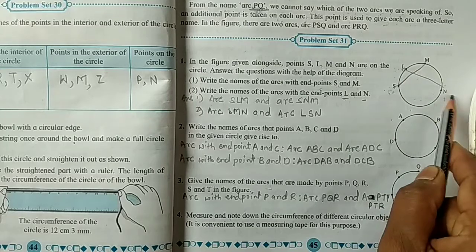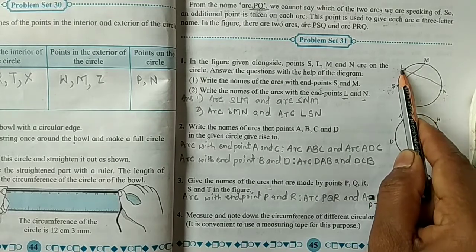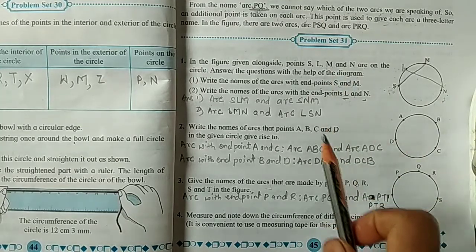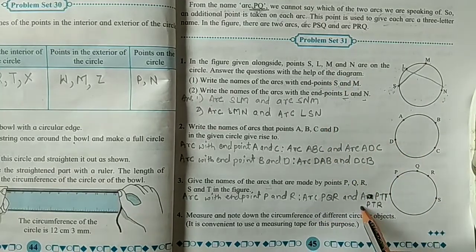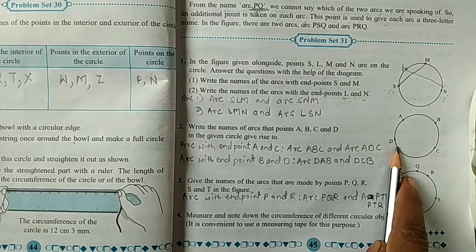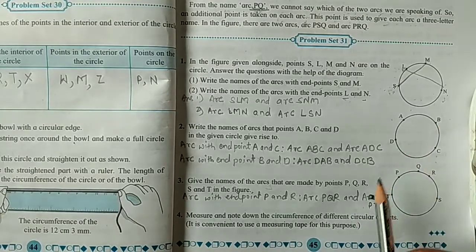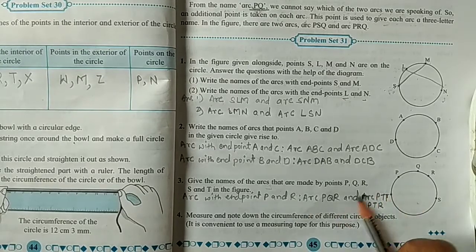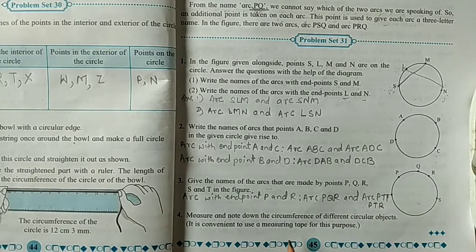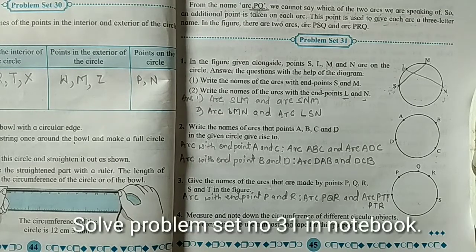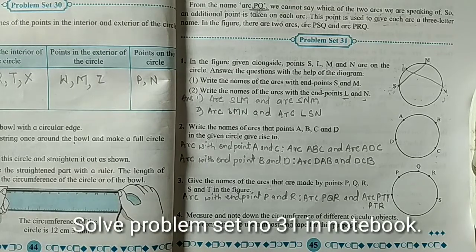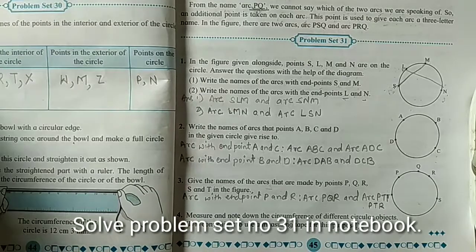So we will get one arc LSN and second LMN. Okay, by using this method you will solve all examples. This one also, take any two endpoints and write the arc name. This also, okay. And the last one, measure and note down the circumference of different circular objects. So everyone knows how we can measure it. Yes, so copy this problem set number 31 in your notebook. Thank you.